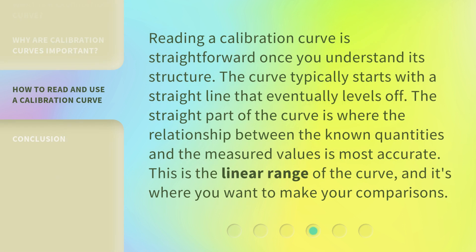A calibration curve is straightforward once you understand its structure. The curve typically starts with a straight line that eventually levels off. The straight part of the curve is where the relationship between the known quantities and the measured values is most accurate. This is the linear range of the curve, and it's where you want to make your comparisons.